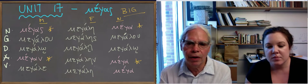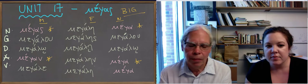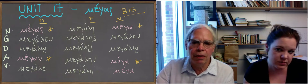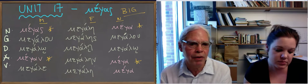Megal, and then they're inflected like agathos, agathe, agathon. So this is the second example of the type that you will see more examples of as you get into Greek.